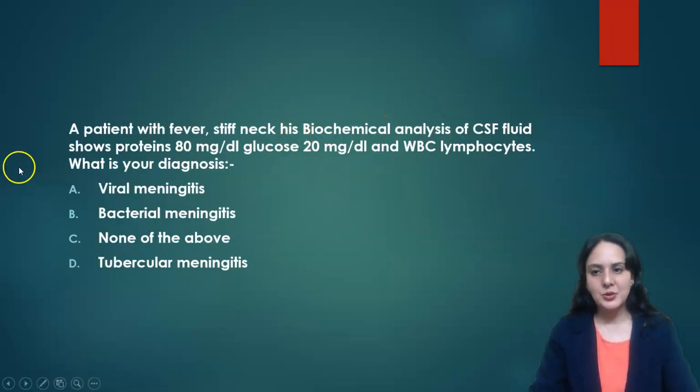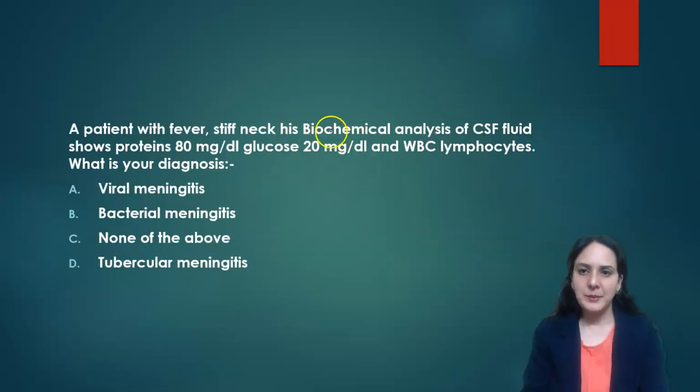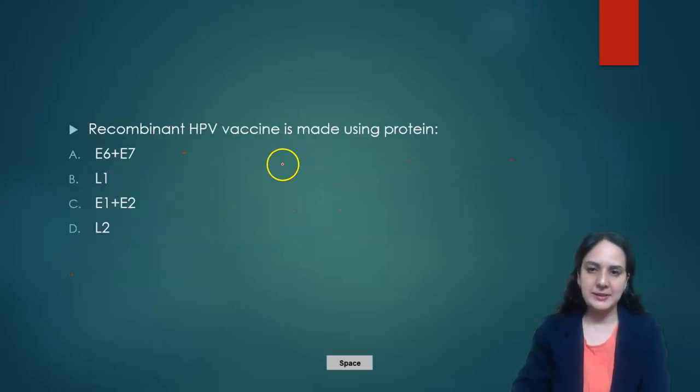Next question was: a patient with fever and stiff neck, biochemical analysis of CSF fluid was done. Proteins were 80 mg/dL and glucose is 20 mg/dL, and WBCs were lymphocytes. We know when glucose is decreased it is either bacterial or tubercular, and now the cells are lymphocytes. So if lymphocytes, it's tubercular. For bacterial we have more neutrophils. So the answer is tubercular meningitis.